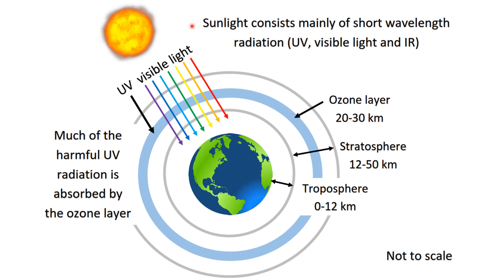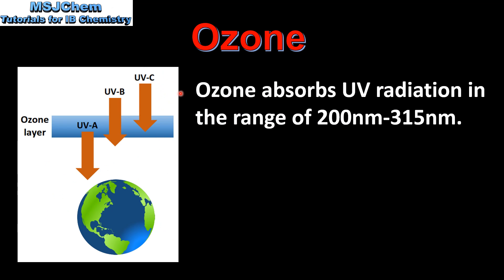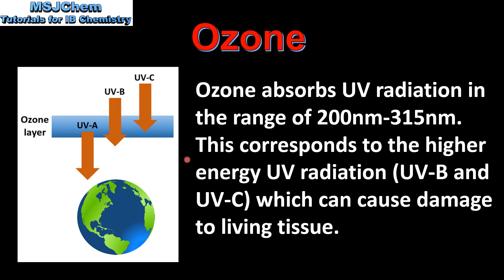Sunlight consists mainly of short wavelength radiation — that's ultraviolet, visible light, and infrared. Much of the harmful UV radiation is absorbed by the ozone layer. Ozone absorbs UV radiation in the range of 200 to 315 nanometers, corresponding to the higher energy UVB and UVC radiation, which can cause damage to living tissue. In this diagram you can see that UVB and UVC radiation are absorbed by the ozone layer, preventing them from reaching the surface of the earth where they can harm living organisms.